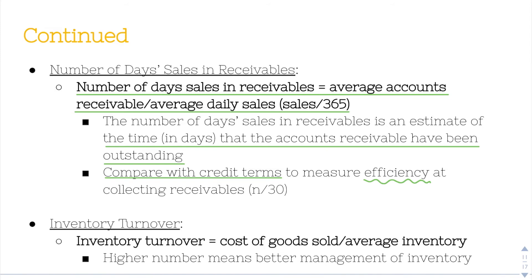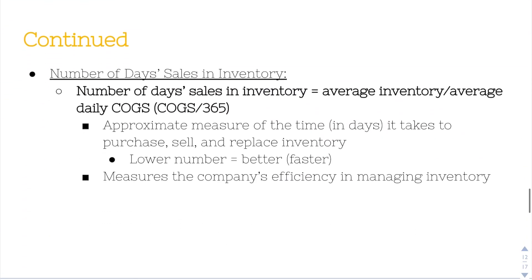Inventory turnover uses a similar formula to accounts receivable turnover, but with cost of goods sold and inventory instead of sales and accounts receivable. Inventory turnover equals cost of goods sold divided by average inventory. A higher number means better management of inventory, though it's always relative. Number of days sales in inventory — also called inventory days — equals average inventory divided by average daily COGS (cost of goods sold ÷ 365). This is an approximate measure of the time in days it takes to purchase, sell, and replace inventory. Here a lower number is better, as it means the cycle is happening faster.